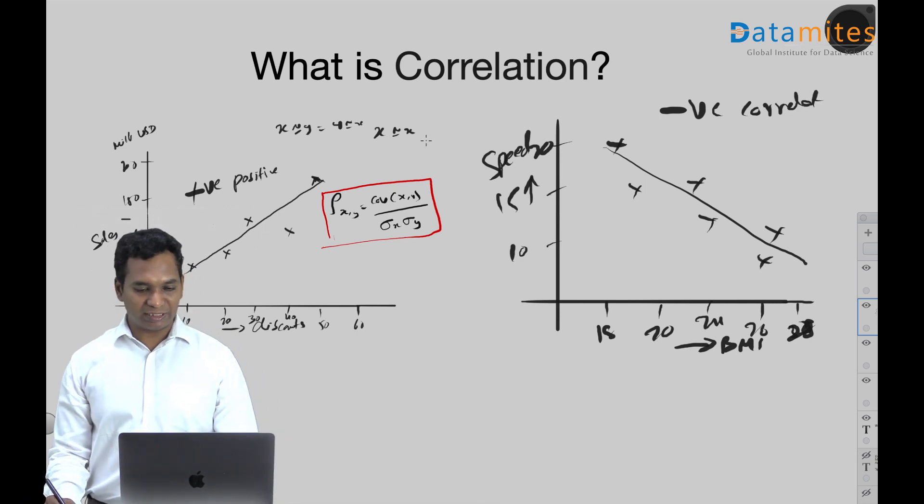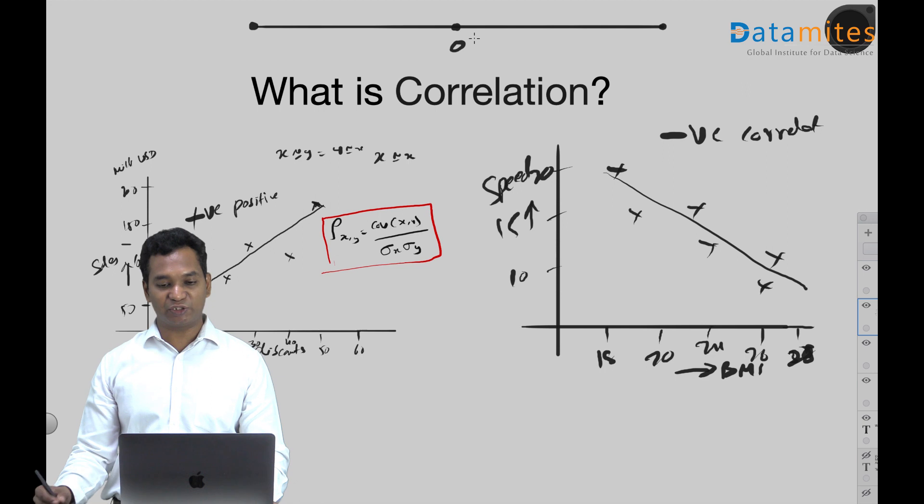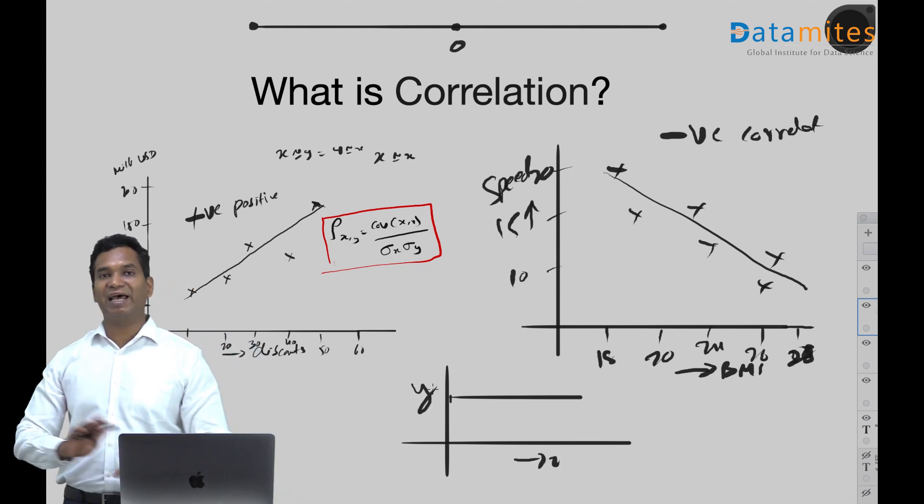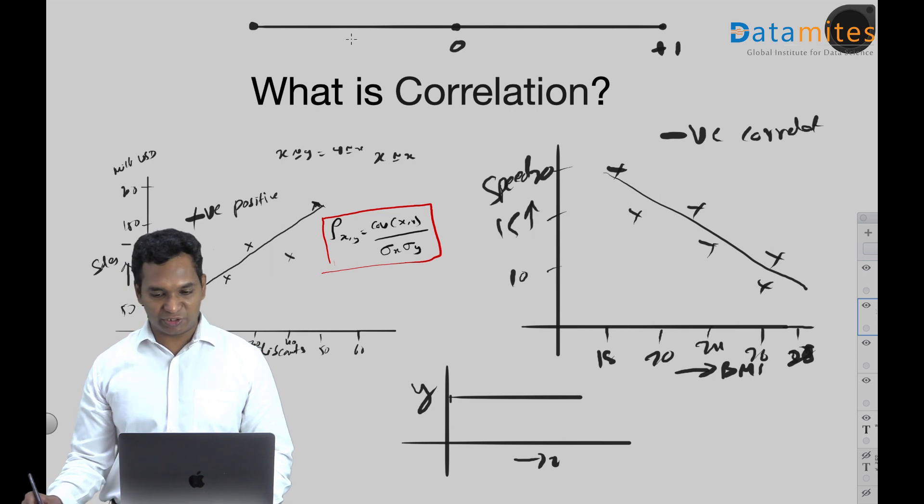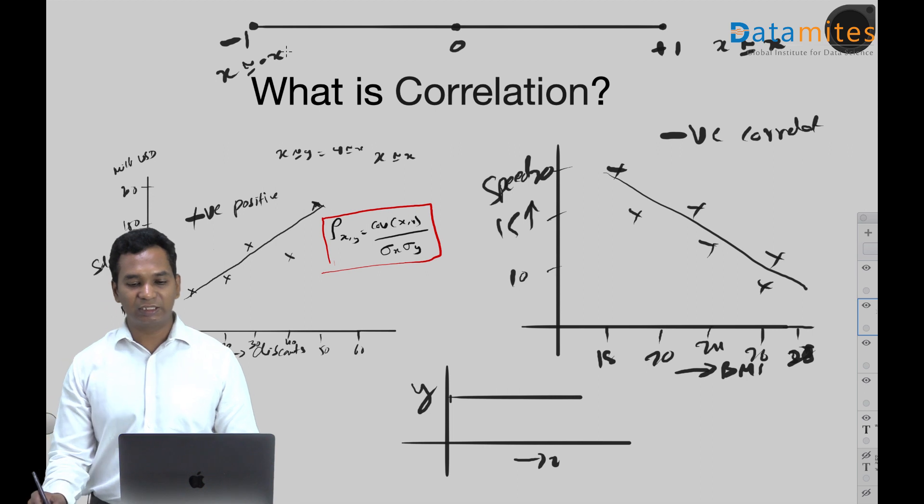And if you try to draw it in a scale, the correlation can go from minus one to plus one, zero being no correlation. So when you say zero, the graph for no correlation might look like this. It does not have - whatever happens to x, the other variable y does not have an effect at all, so they are not influenced by each other's value. Then we will say zero correlation. So plus one is the highest correlation, happens when x is correlated with x itself, and minus one is the lowest possible correlation, happens when x is correlated with minus x, the same variable with the negative offset.